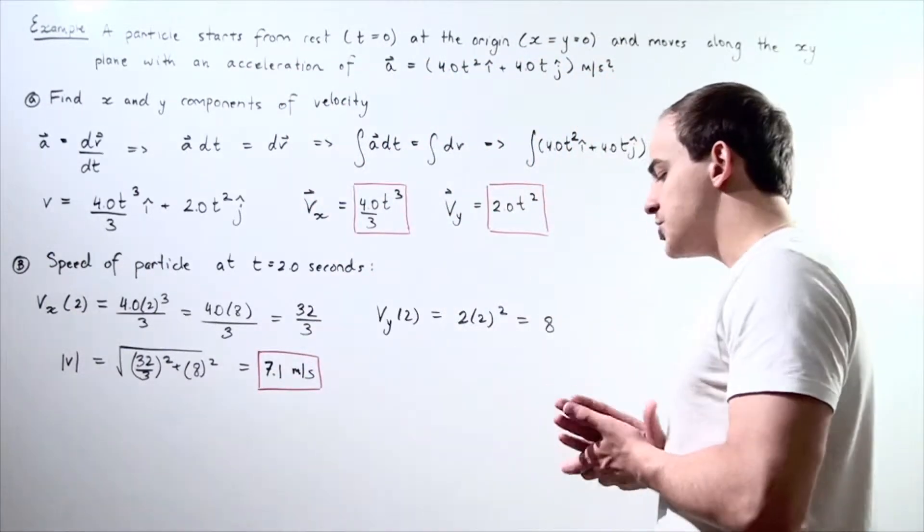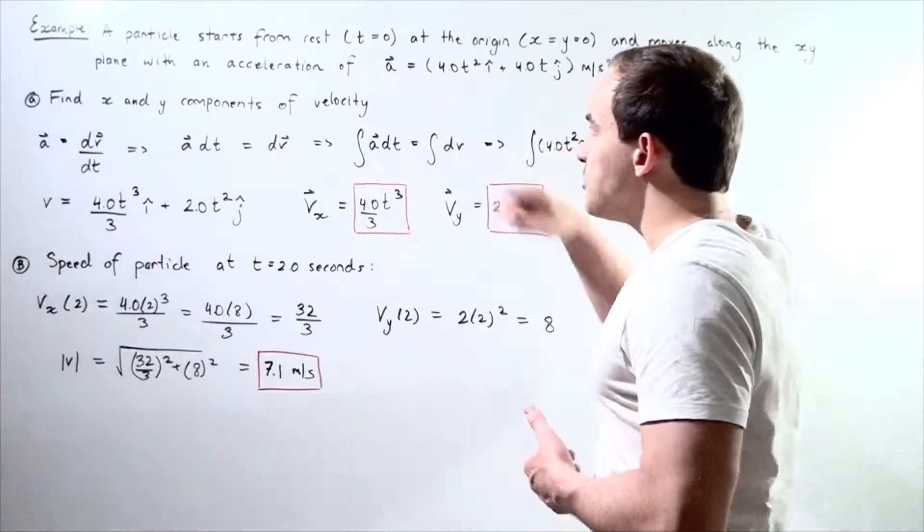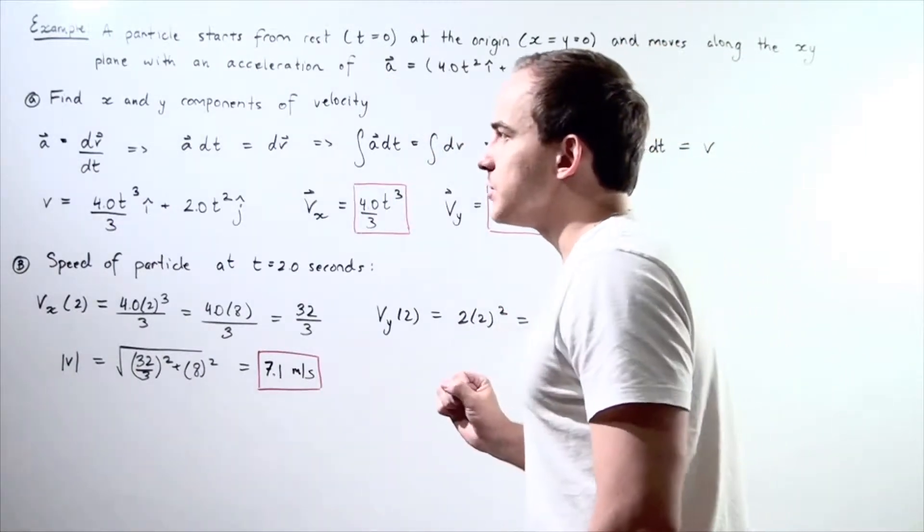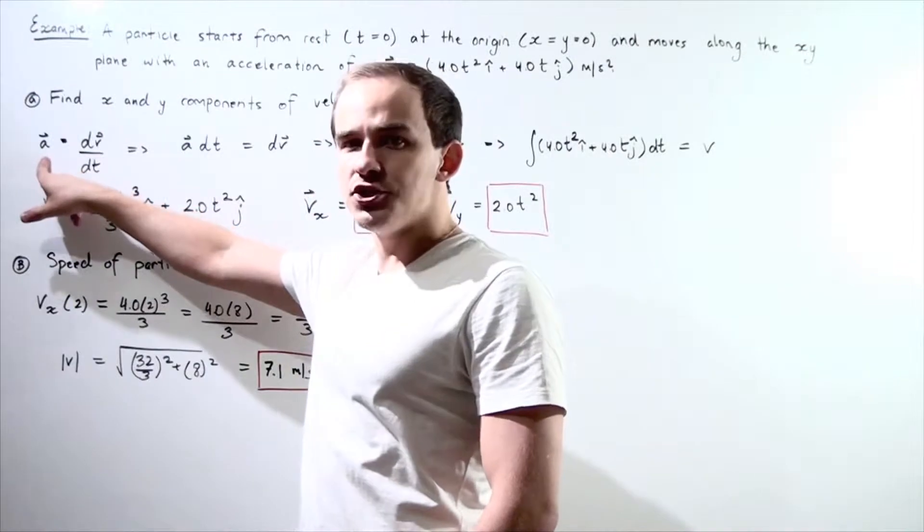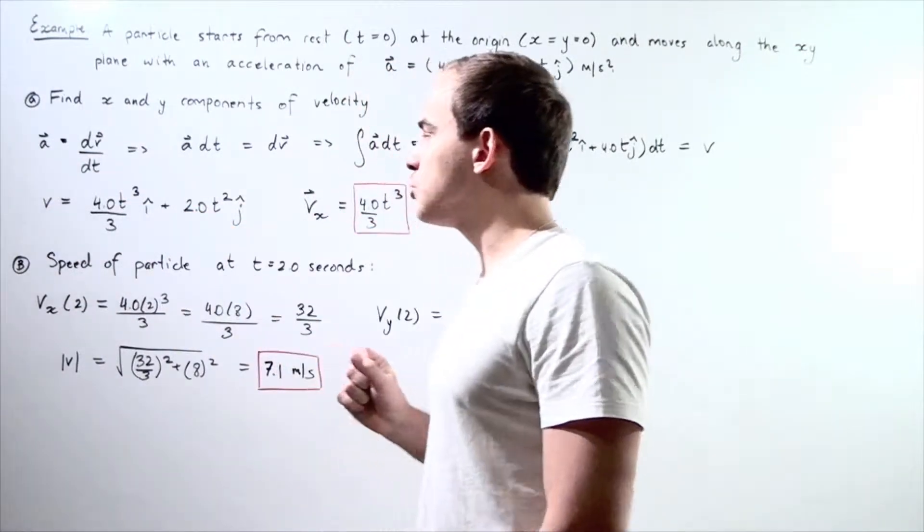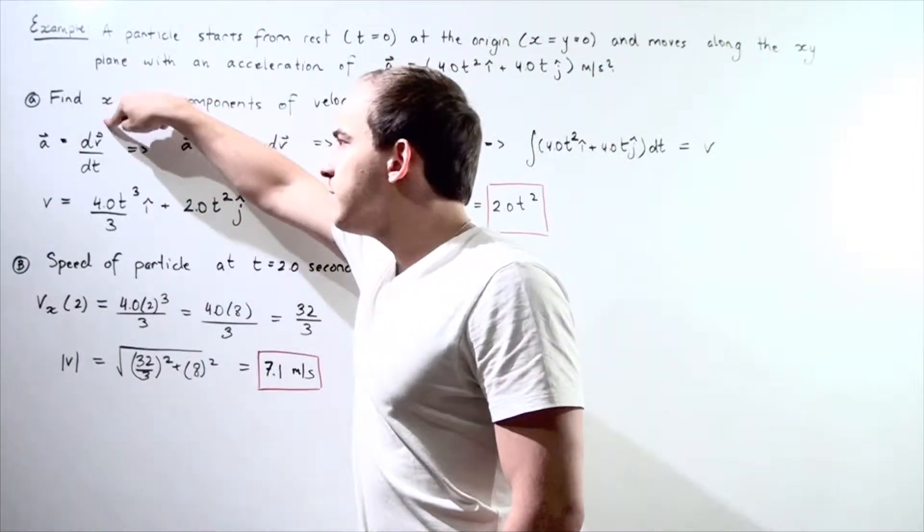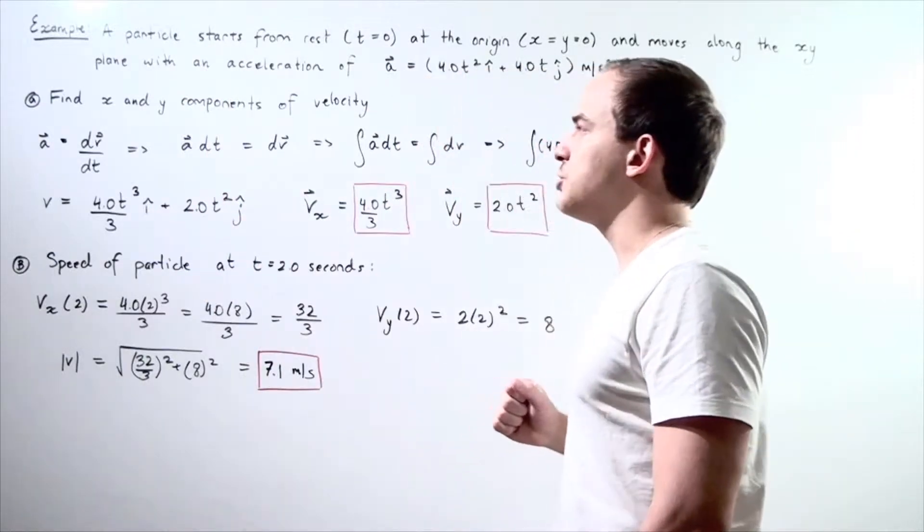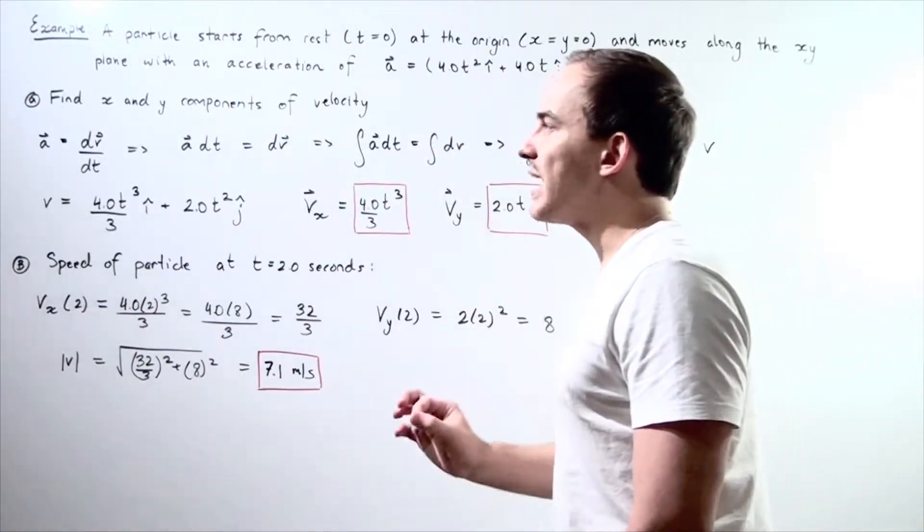Let's recall our definition of our acceleration vector in two dimensions. Our instantaneous acceleration in two dimensions is equal to taking the derivative of our velocity function in two dimensions with respect to time.